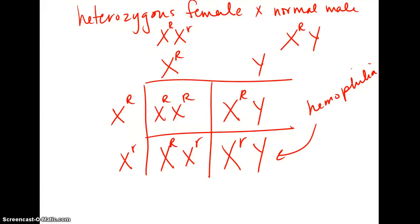That sums up sex-linked traits. A couple of things you need to know: Always be sure that you use the X and the Y. And the second thing is make sure that the Y does not carry the trait because the gene doesn't exist on that chromosome.